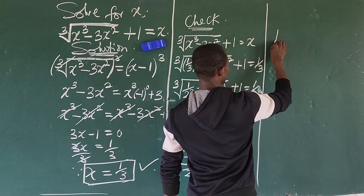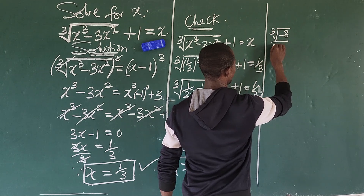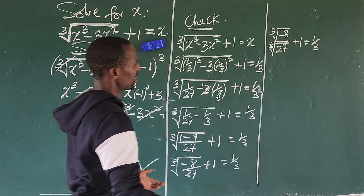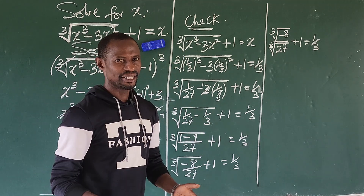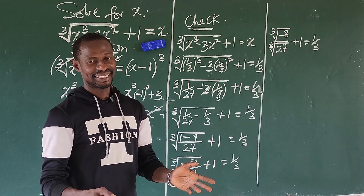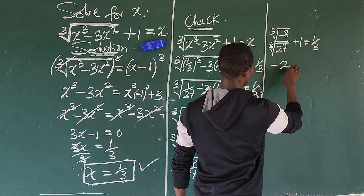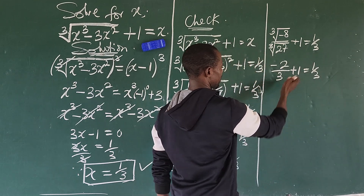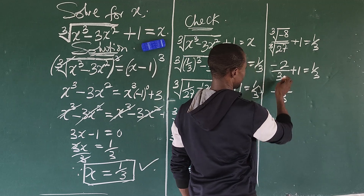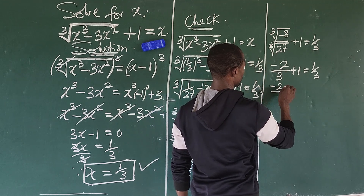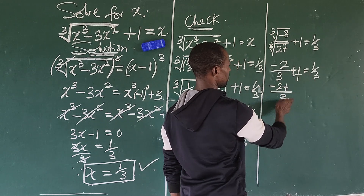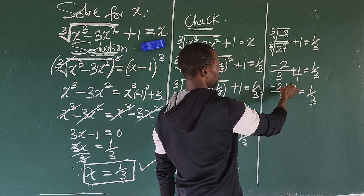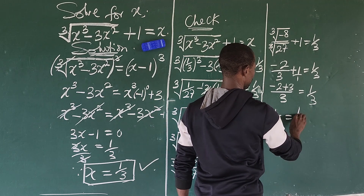Taking the cube root of minus 8 over 27: the cube root of minus 8 is minus 2, and the cube root of 27 is 3. So we have minus 2 over 3 plus 1. The LCM is 3, giving us minus 2 over 3 plus 3 over 3, which equals 1 over 3 — which equals 1 over 3. Confirmed!